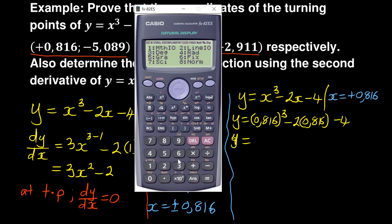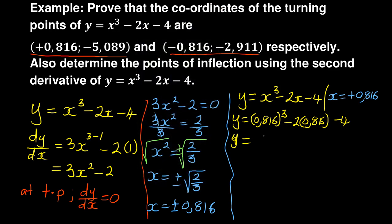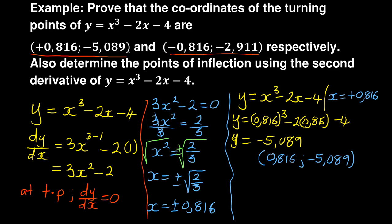Let's check: setting the calculator to 3 decimal places gives −5.089, which is exactly what we're getting. So you can see the coordinates are proven — when x = 0.816, y = −5.089. Remember the question says prove the coordinates, and you have done the first one.